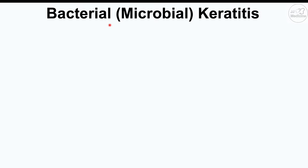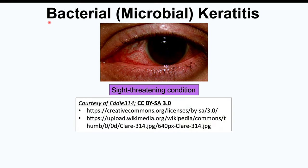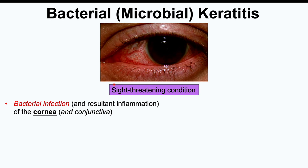The next condition is bacterial or microbial keratitis. Microbial keratitis is a term for any infective condition causing keratitis — an inflammation of the cornea. The first important point here is that this is a sight-threatening condition. If not quickly diagnosed and treated properly, it can lead to vision loss. Bacterial keratitis is caused by a bacterial infection resulting in inflammation of the cornea, and it can also lead to conjunctivitis.